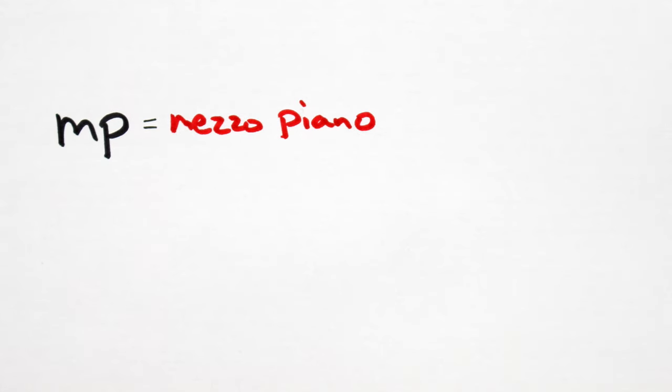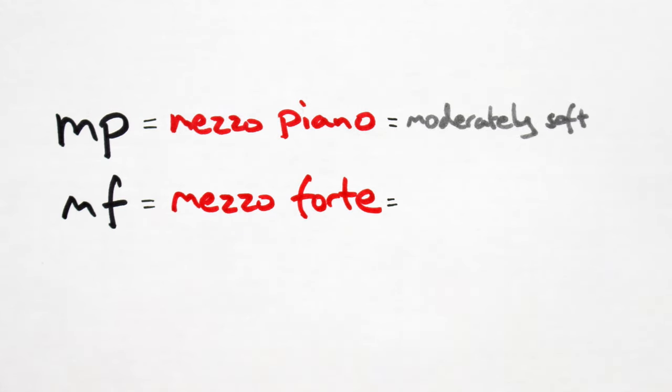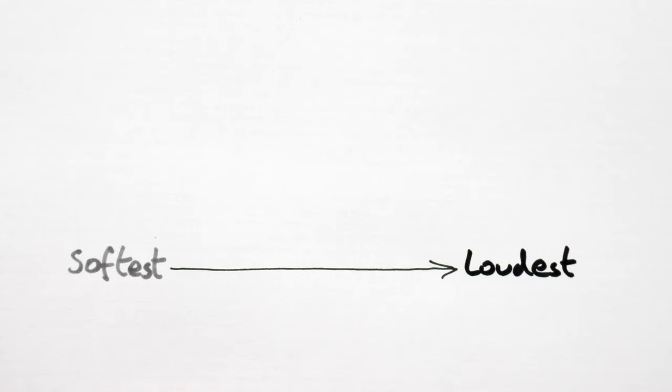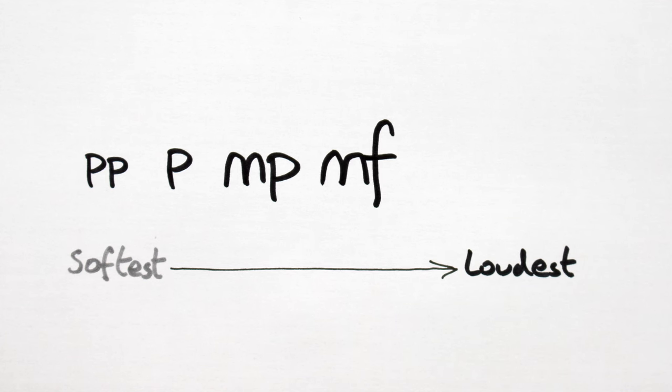If we tack on an M, we get mezzo piano and mezzo forte. Play moderately soft and moderately loud. Think M for mezzo and M for moderately. And there you have it. In order of softest to loudest, we have pianissimo, piano, mezzo piano, mezzo forte, forte, and fortissimo.